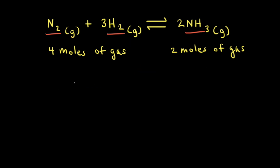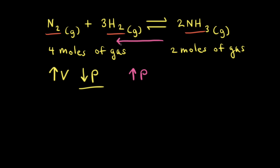If we had a mixture of these gases at equilibrium and we increased the volume, an increase in volume would cause a decrease in pressure — the stress this time is decreased pressure. To relieve the stress, the net reaction wants to move in the direction that increases the pressure. Therefore, the net reaction moves to the left, going from two moles of gas on the right to four moles of gas on the left — an increase in the moles of gas — which causes an increase in pressure.